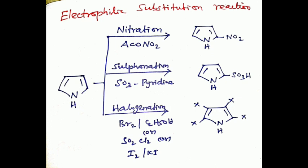Pyrrole is combined with nitroacetate in a nitration reaction to form 2-nitropyrrole. Pyrrole is combined with sulfur trioxide in the presence of pyridine in sulfonation reaction to form pyrrole-2-sulfonic acid. Whereas in the halogenation reaction, that is combined with bromine with alcohol, or thionyl chloride, or iodine with potassium iodide, to form 2,3,4,5-tetrahalopyrrole derivatives. Here X is whether bromine or iodine or chlorine.